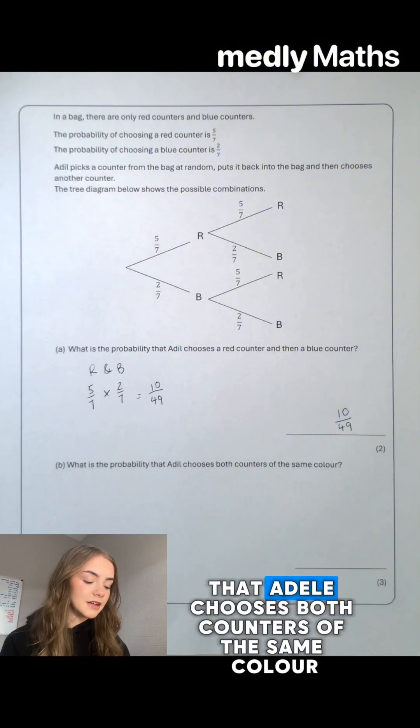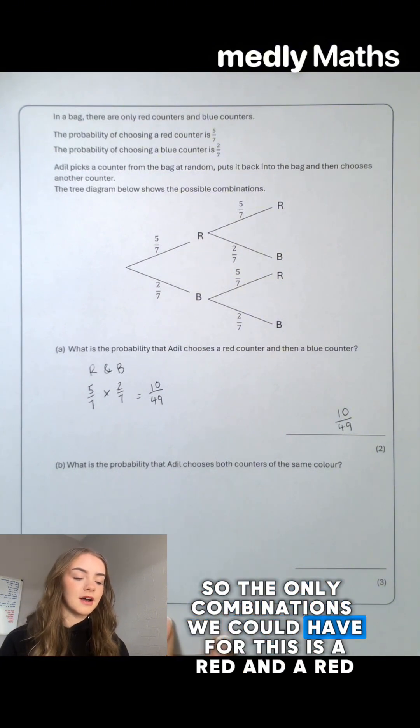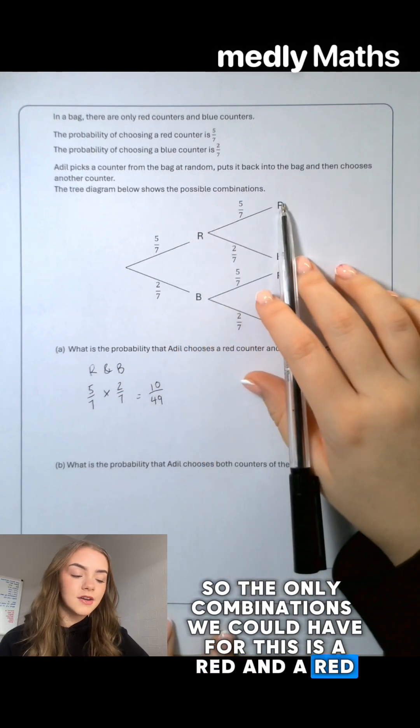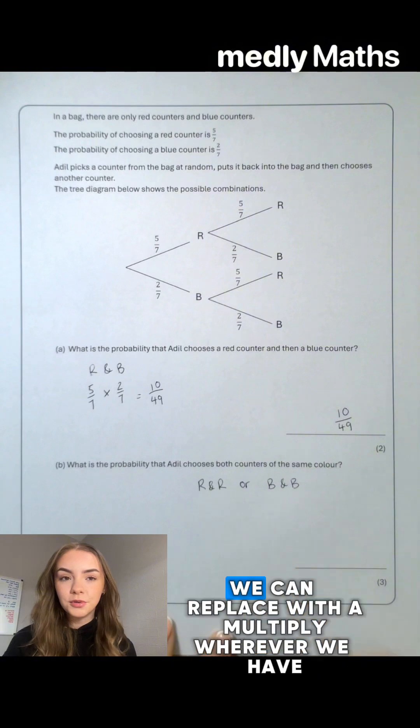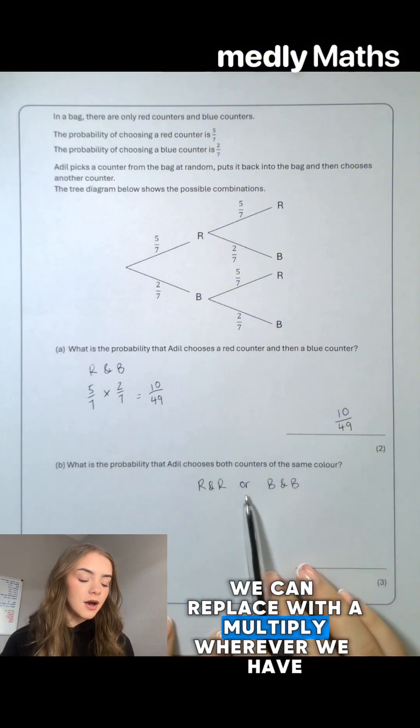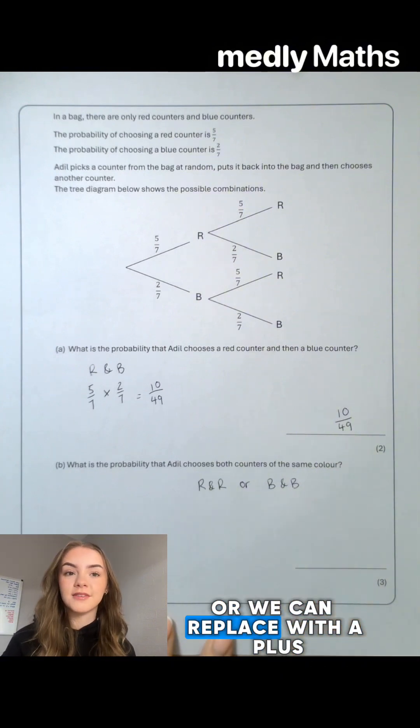So what is the probability that Adil chooses both counters of the same colour? So the only combinations we could have for this is a red and a red or we could have a blue and a blue. Again, wherever we have the 'and' symbol we can replace with a multiply, wherever we have 'or' we can replace with a plus.